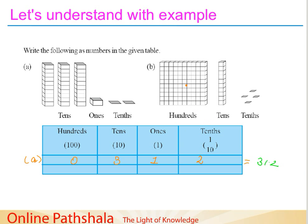Let us go to the next one. Here it is 100 — 1 block of 100. Then 1 block of 10, 0 blocks of 1s, and 4 blocks of tenths. Let us figure out what this number would be in decimals. This will be 110, and the tenths will be represented after the dot — so we put the dot first and then the 4. So this number is 110.4.